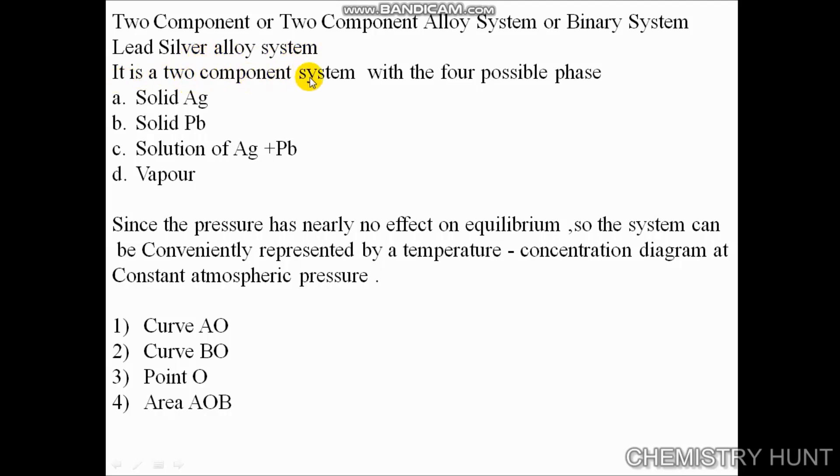It is a two-component system with four possible phases: solid silver, solid lead, solution of silver plus lead, and vapor. Since pressure has nearly no effect on equilibrium, the system can be conveniently represented by a temperature-concentration diagram at constant atmospheric pressure.